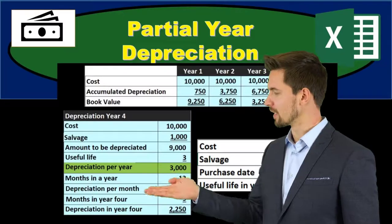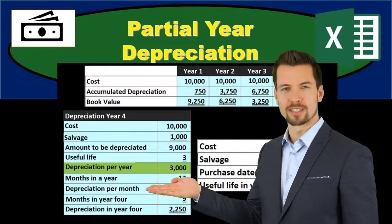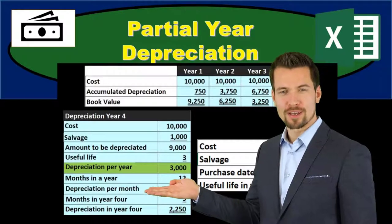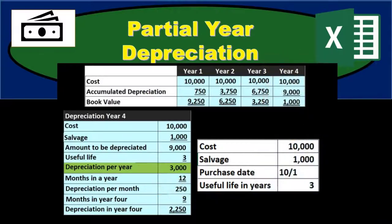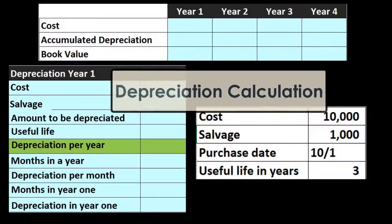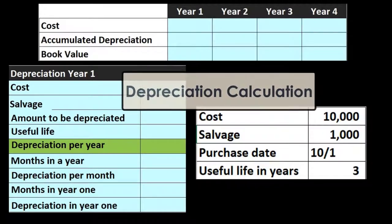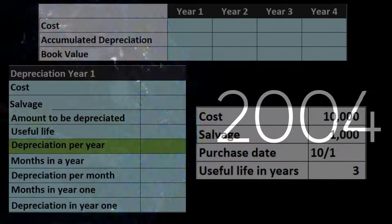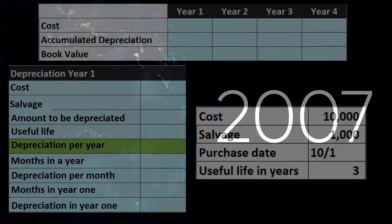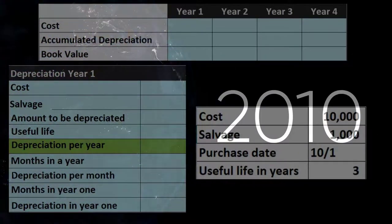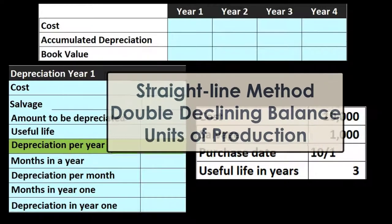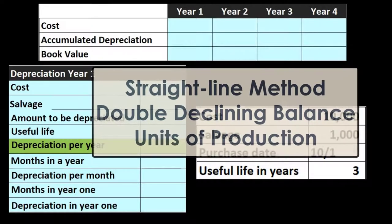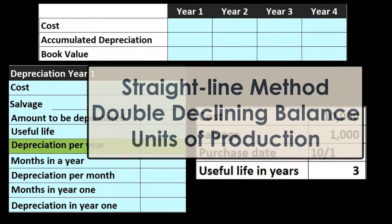In this presentation, we will take a look at the depreciation calculation for a partial year. When considering depreciation calculations, we typically think of whole months or whole years in order to simplify the process and learn the different types of methods, including straight line, double declining, and units of production.